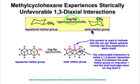The axial methyl group is less favorable — that was the higher energy conformation that we found. This is less stable than the equatorial methyl group, and the reason is what's known as 1,3-diaxial interactions.